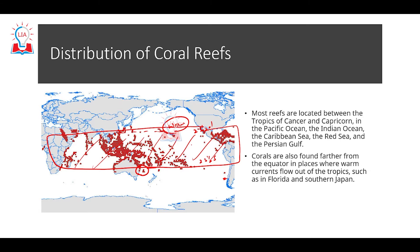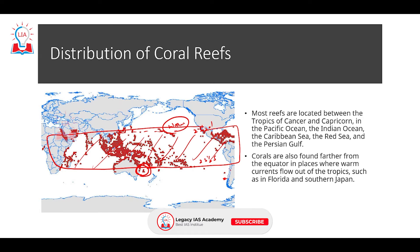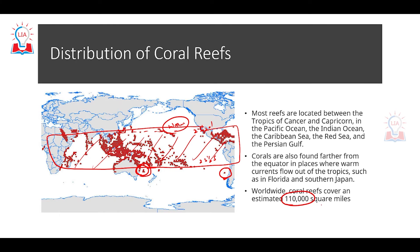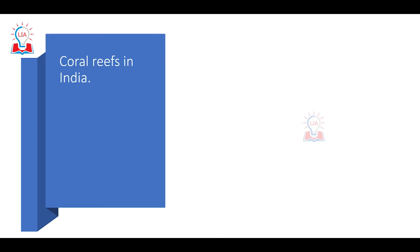Even outside the tropics, if a warm ocean current flows through an area, the rise in water temperature can support coral reefs or coral polyps. Worldwide, coral reefs comprise about 110,000 square miles, making them a very large and significant ecosystem.